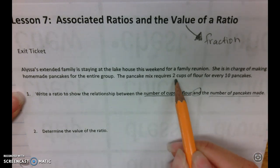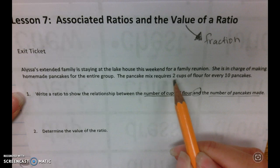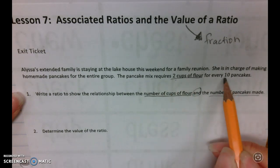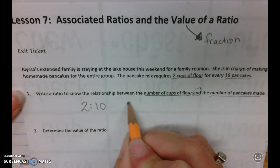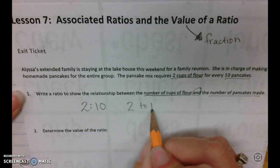We can find that in our problem up here: two cups of flour, ten pancakes. So that means we have a ratio of 2 to 10, or we know another way to write it is 2:10.